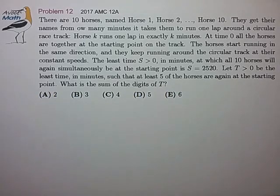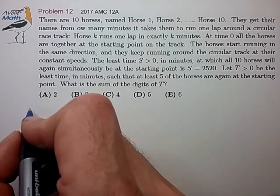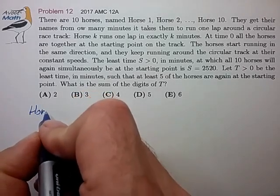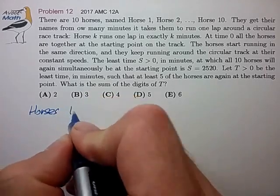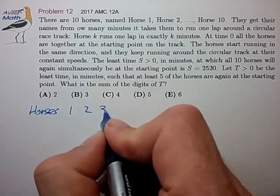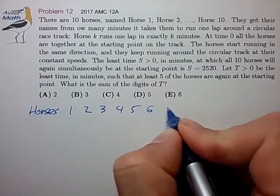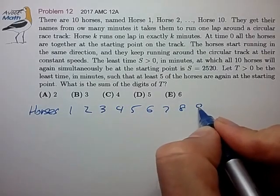Okay, what a wordy problem. So I don't quite understand this problem entirely, so my first instinct is to look at some examples. So let's list out the horses. Horses 1, 2, 3, 4, 5, 6, 7, 8, 9, and 10.